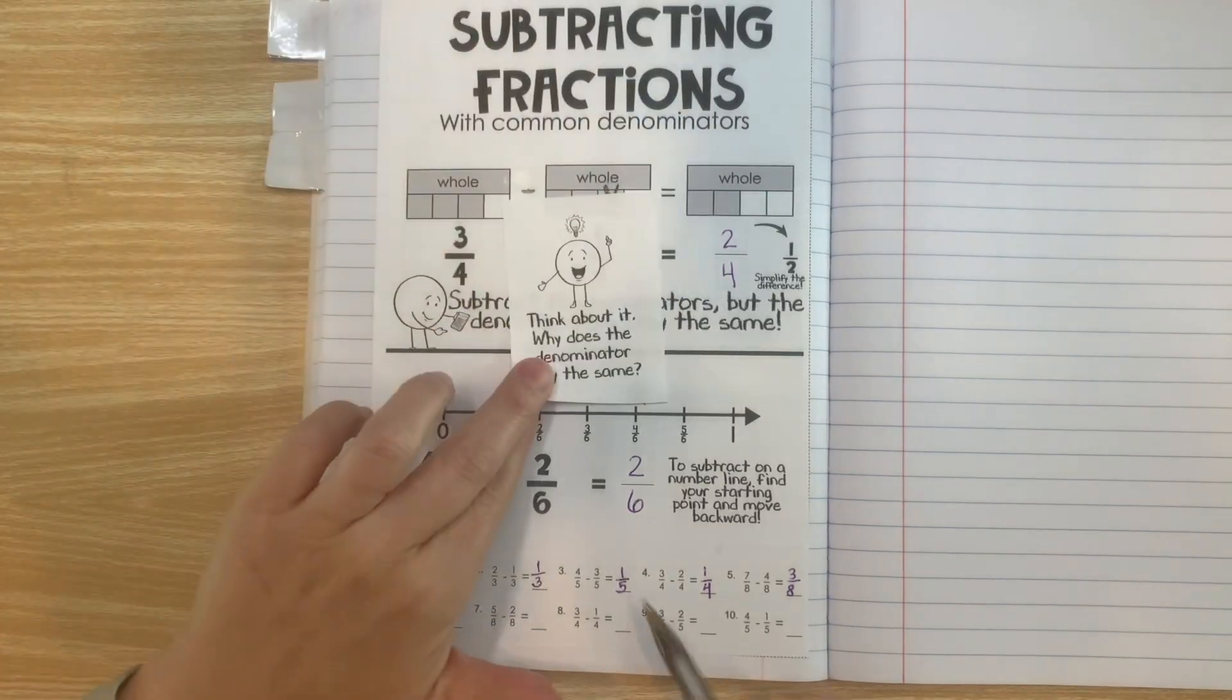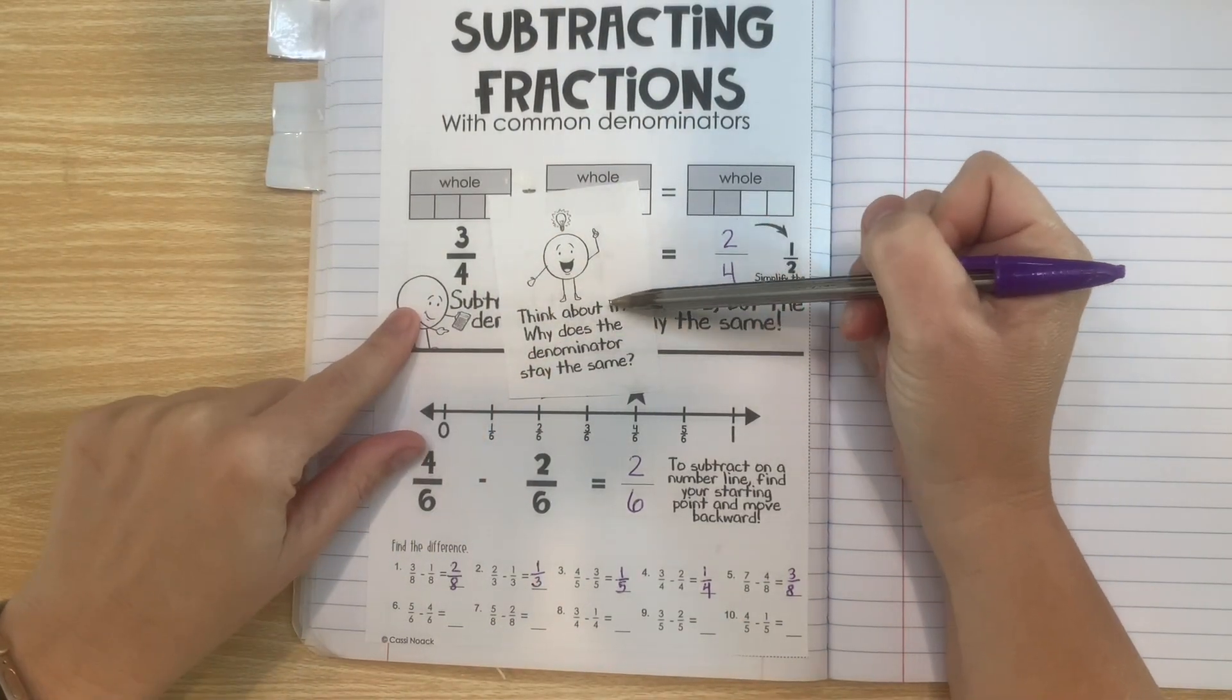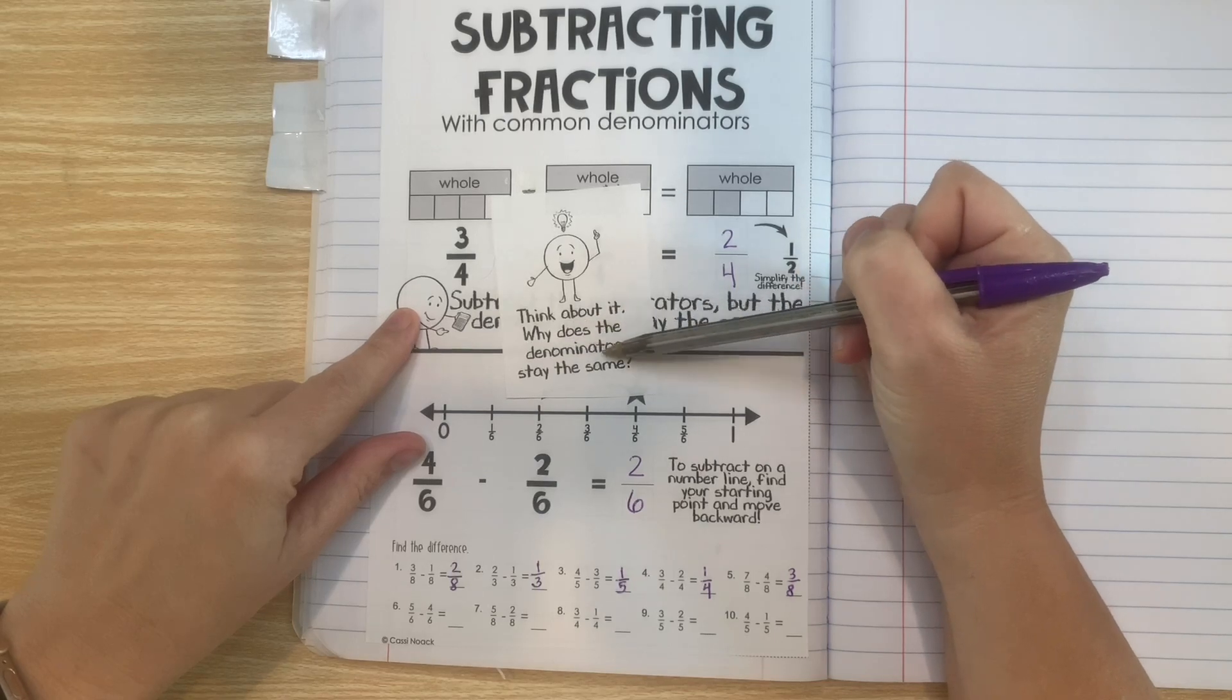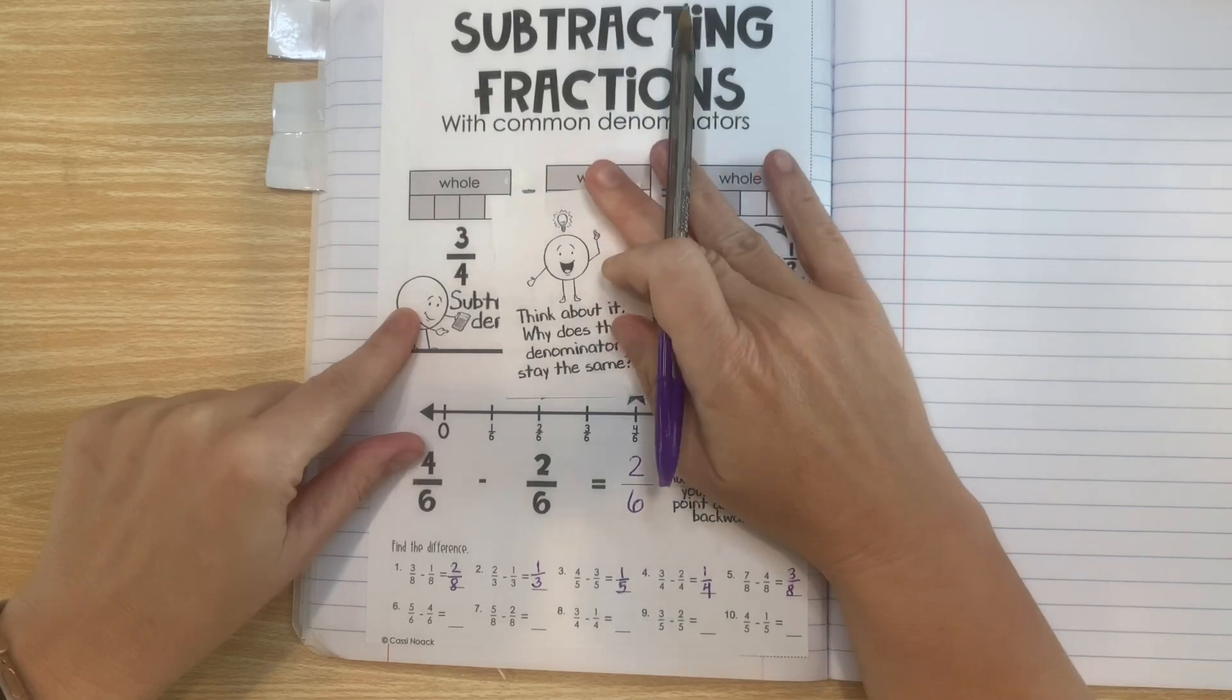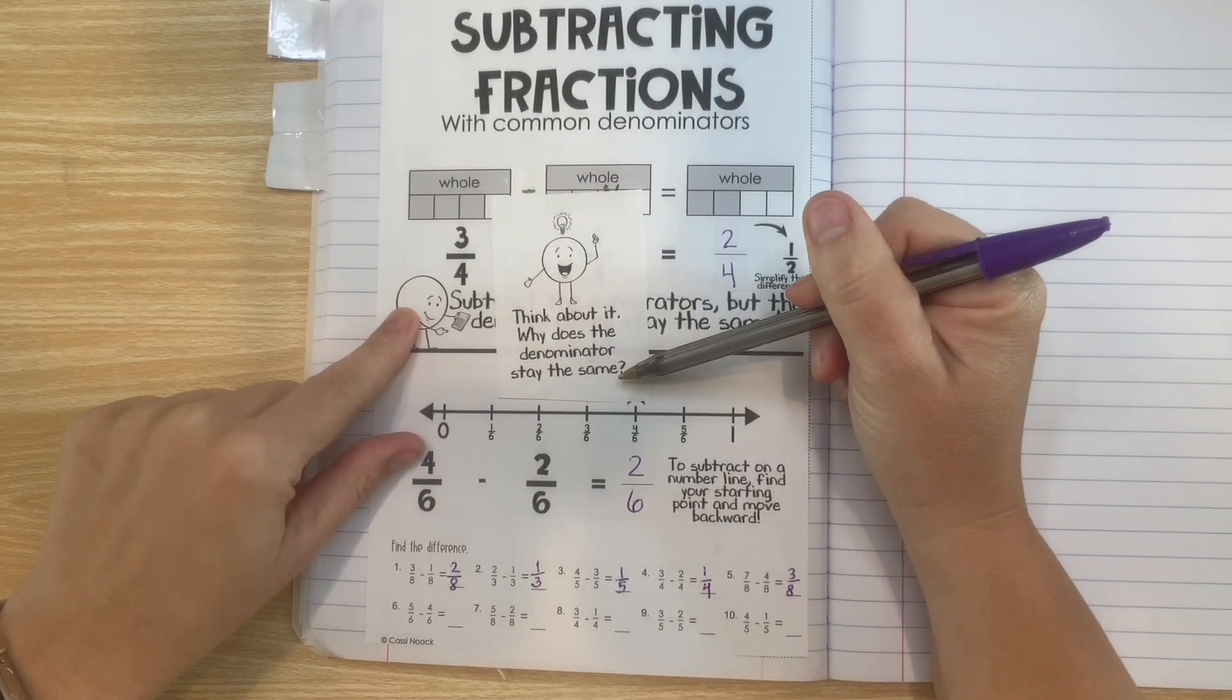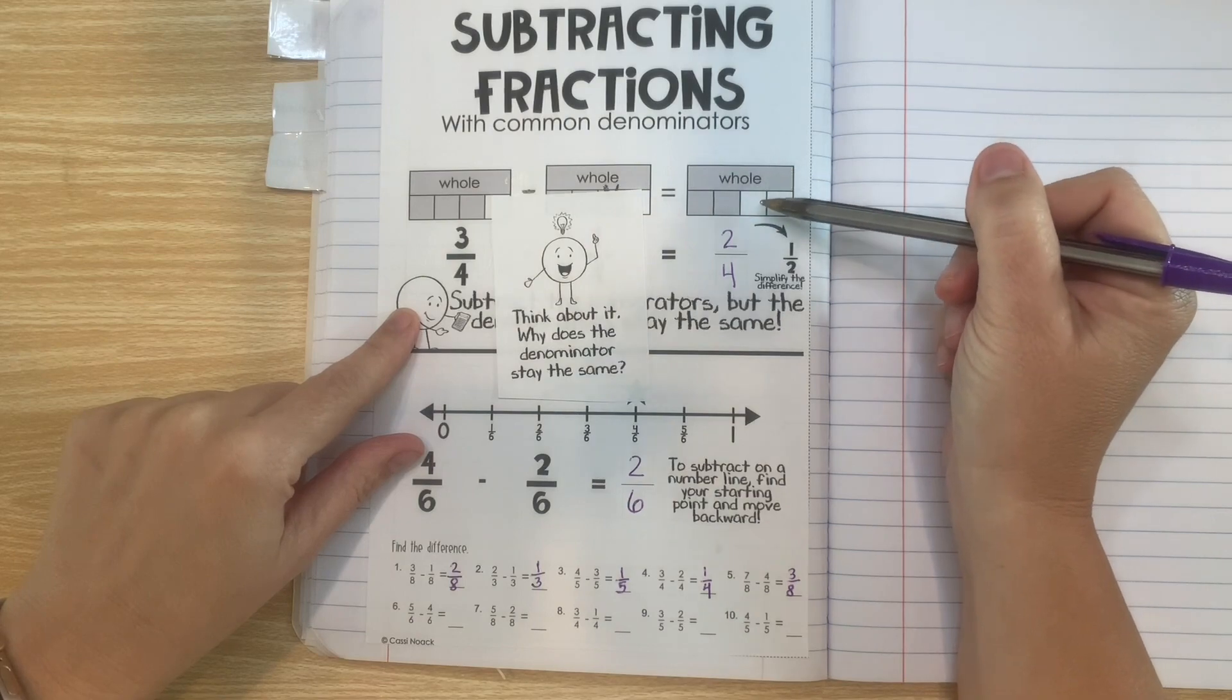It says think about it. Why does the denominator stay the same? That's a great question. The denominator stays the same because the number of parts in the whole doesn't change.